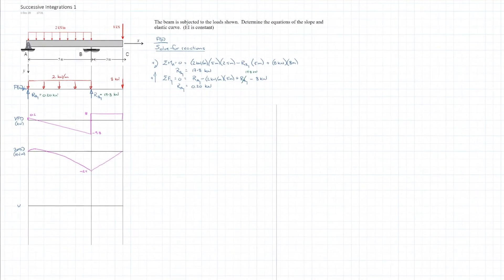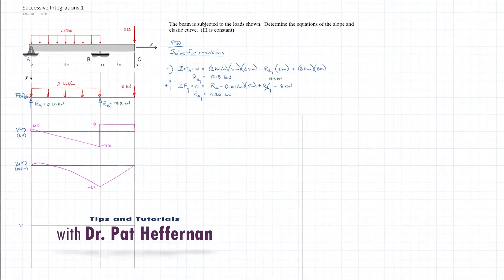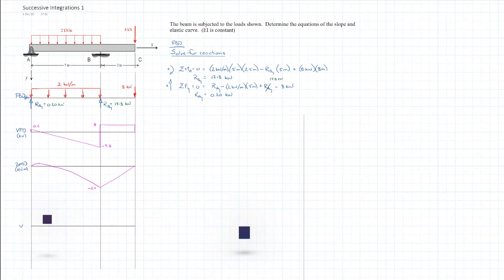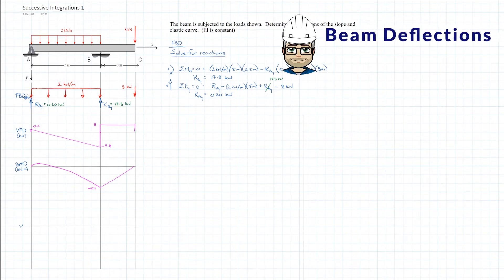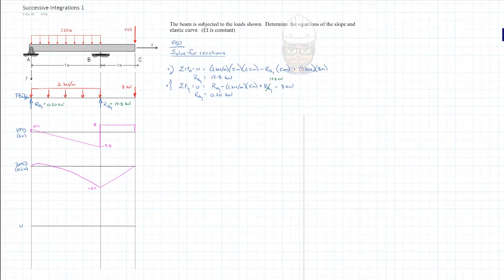Today we're going to be solving a beam problem and looking to derive an equation for the elastic curve. The beam has a uniformly distributed load between the pin support at A and the roller support at B, and then there's an overhang with a point load at the end of that overhang at point C.